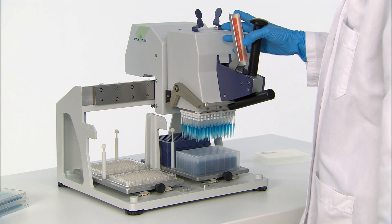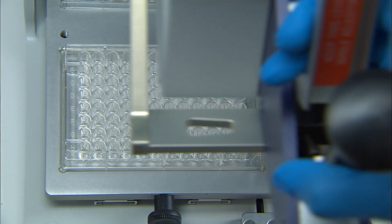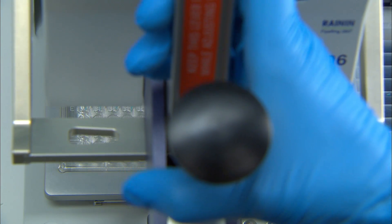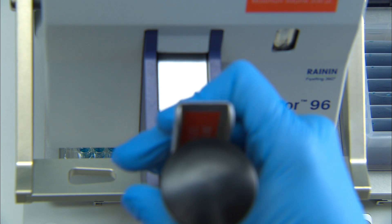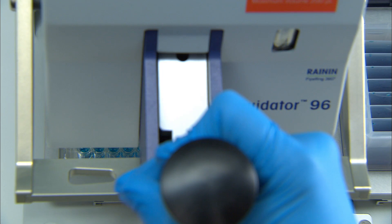When the liquid is aspirated, slide the liquid head to the left over the 96 well plate and push it down gently. Squeeze the lever again to dispense the liquid into the 96 well plate. Squeeze the lever one more time for the blowout step.